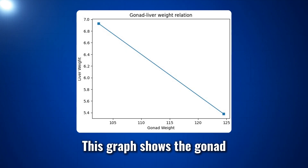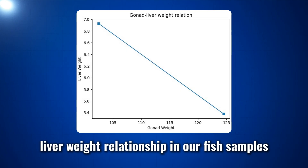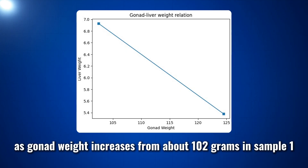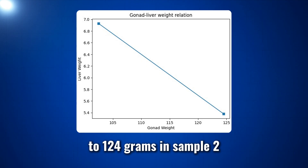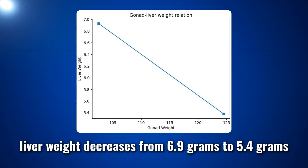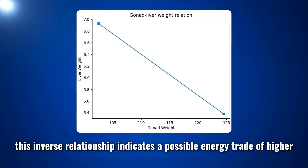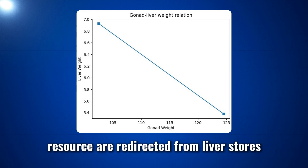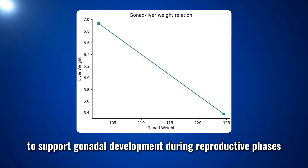This graph shows the gonad-liver weight relationship in our fish samples. As gonad weight increases from about 102 grams in sample 1 to 124 grams in sample 2, liver weight decreases from 6.9 grams to 5.4 grams. This inverse relationship indicates that higher resources are redirected from liver storage to support gonadal development during reproductive phases.